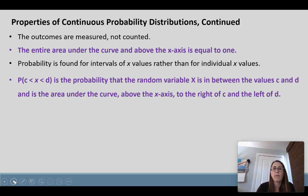The probability that X is greater than c and less than d is the probability that the random variable X is in between the values of c and d and is the area under the curve, above the x-axis, and between c and d on your graph. We're going to look at pictures. It'll make more sense.